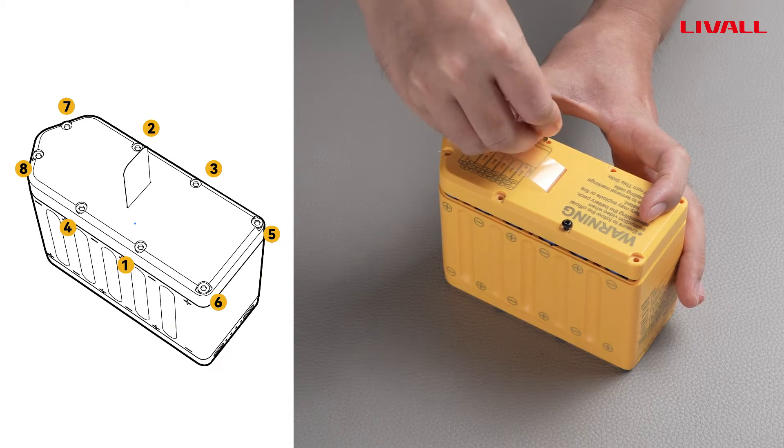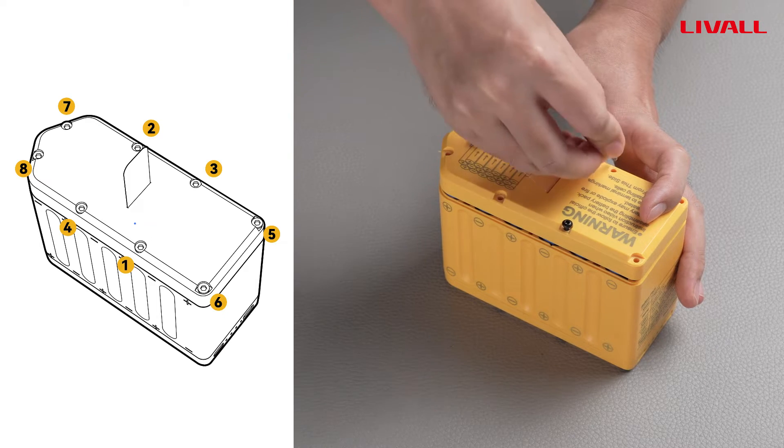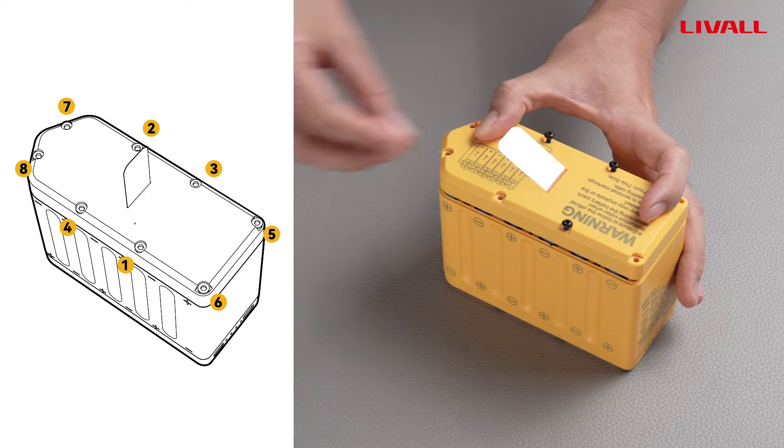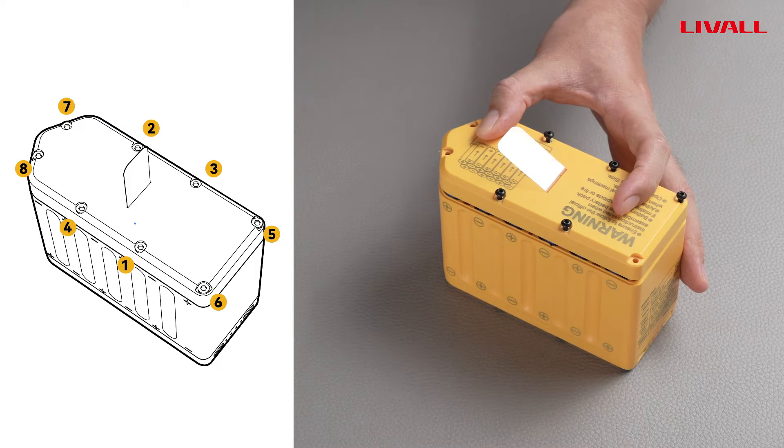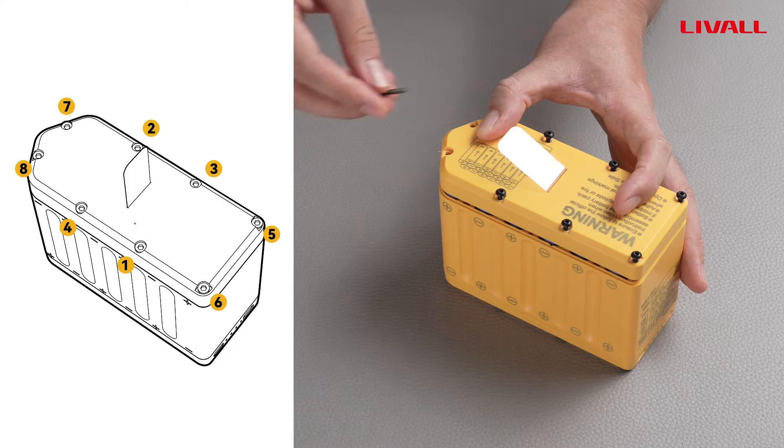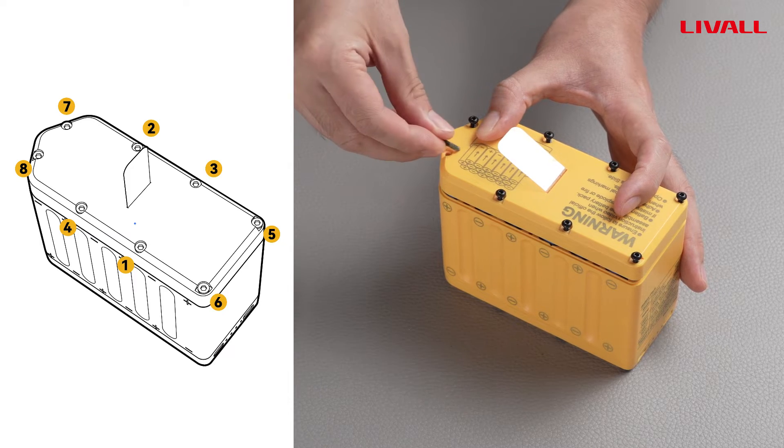Before twisting the screws, place all screws into the screw holes and roughly fix the position of the cover. Be careful not to shift the position of the cover, as this can easily cause misalignment and friction between the metal contacts on the cover and the battery poles, leading to short circuits and burning of the circuit board.